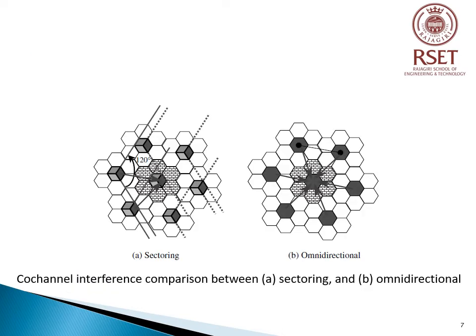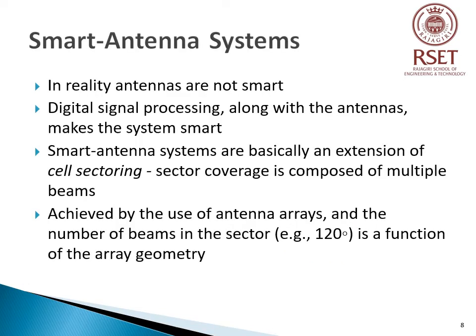A figure shows the comparison of co-channel interference between sectorized systems and omnidirectional systems. Co-channel interference decreases in sectorized systems since only two neighboring cells interfere instead of six in omnidirectional systems. However, cell sectoring did not provide the solution needed for the capacity problem. Therefore, system designers began to look into a system that could dynamically sectorize the cell. This led to the idea of smart antennas.